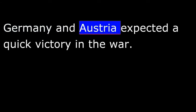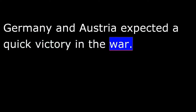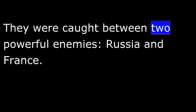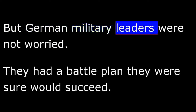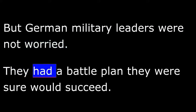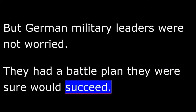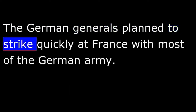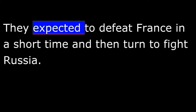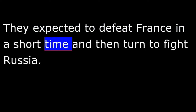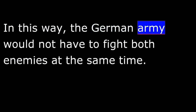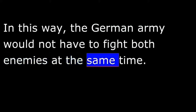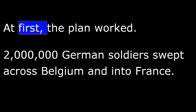Germany and Austria expected a quick victory. Caught between two powerful enemies — Russia and France — German military leaders were not worried. They had a battle plan they were sure would succeed. The German generals planned to strike quickly at France with most of the German army, defeat France in a short time, and then turn to fight Russia, so they would not have to fight both enemies at the same time.